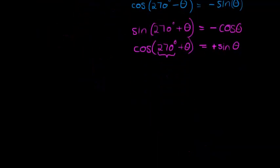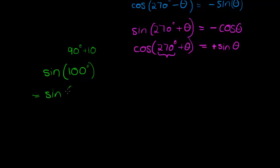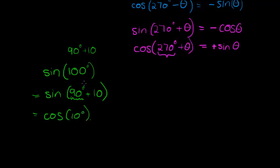Let's do a quick example. If I have sine of 100 degrees, 100 is 90 degrees plus 10, so I can write this as sine of 90 degrees plus 10. Since this is in the second quadrant where sine is positive, I can write it as cos of 10 degrees, using the co-ratio since 90 degrees refers to the y-axis and I want the x-axis. This format and the original are equivalent — we simply applied the co-ratio.